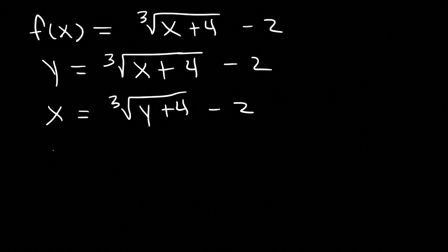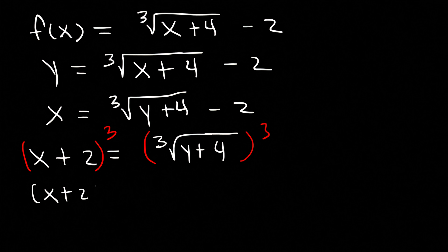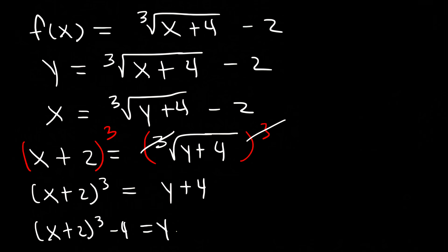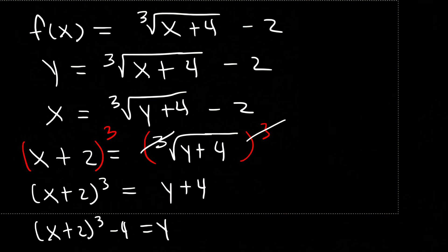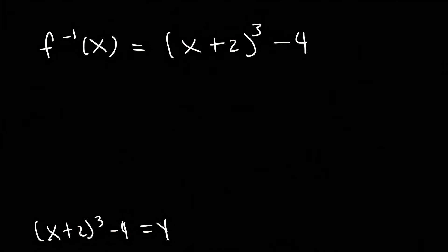So let's add 2 to both sides. So we're going to have x plus 2 is equal to the cube root of y plus 4. Now, how can we get rid of the cube root symbol? In order to get rid of it, you need to take the cube of both sides. So on the left side, you're going to have x plus 2 raised to the third power, and on the right side, just y plus 4. These will cancel. And now let's subtract both sides by 4. So we have x plus 2 raised to the third minus 4, which is equal to y. Therefore, the inverse function is equal to x plus 2 to the third power minus 4. And that is the answer.